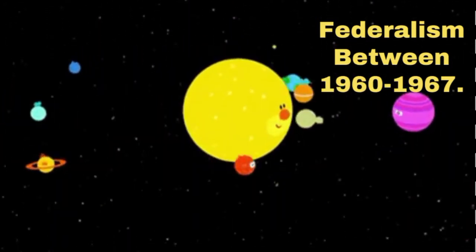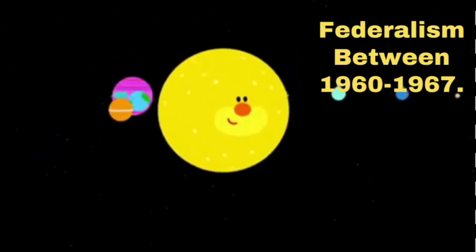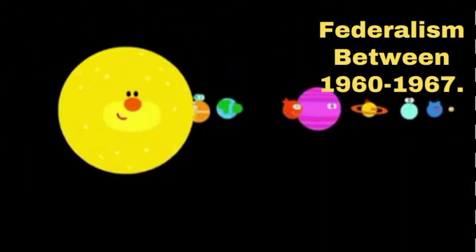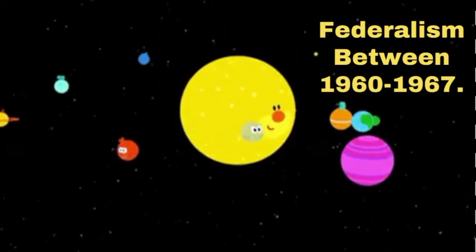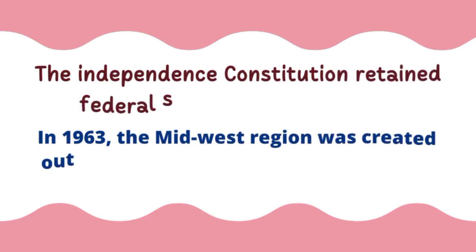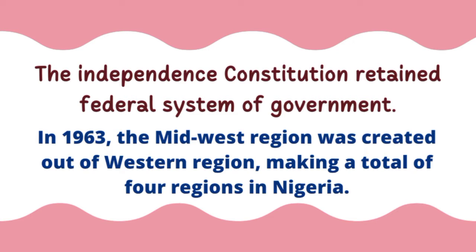Now let's look at federalism between 1960 and 1967. When Nigeria gained independence in 1960, it inherited the three regions from the colonial masters. Not until the year 1963 was the midwest region created out of the former western region. With the creation of the midwest region, Nigeria was now made up of four regions.